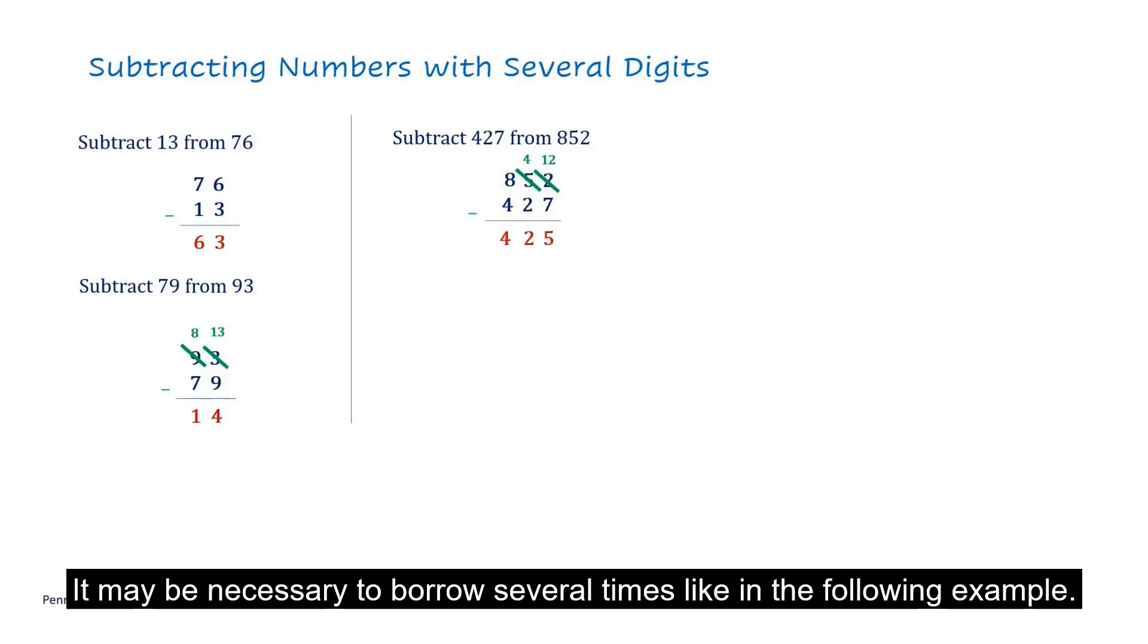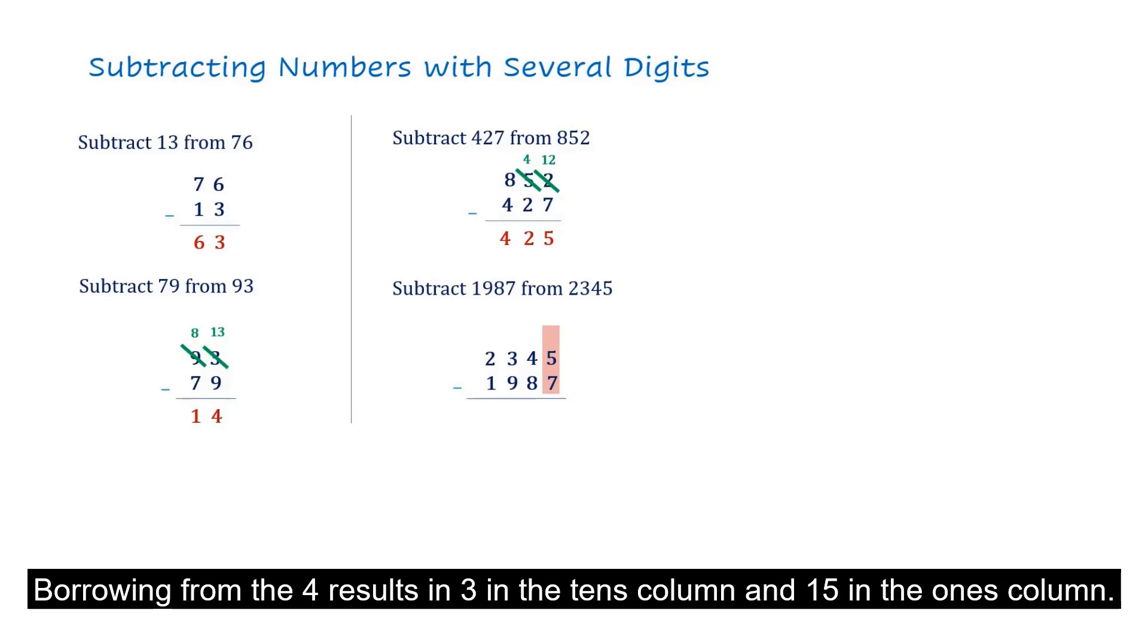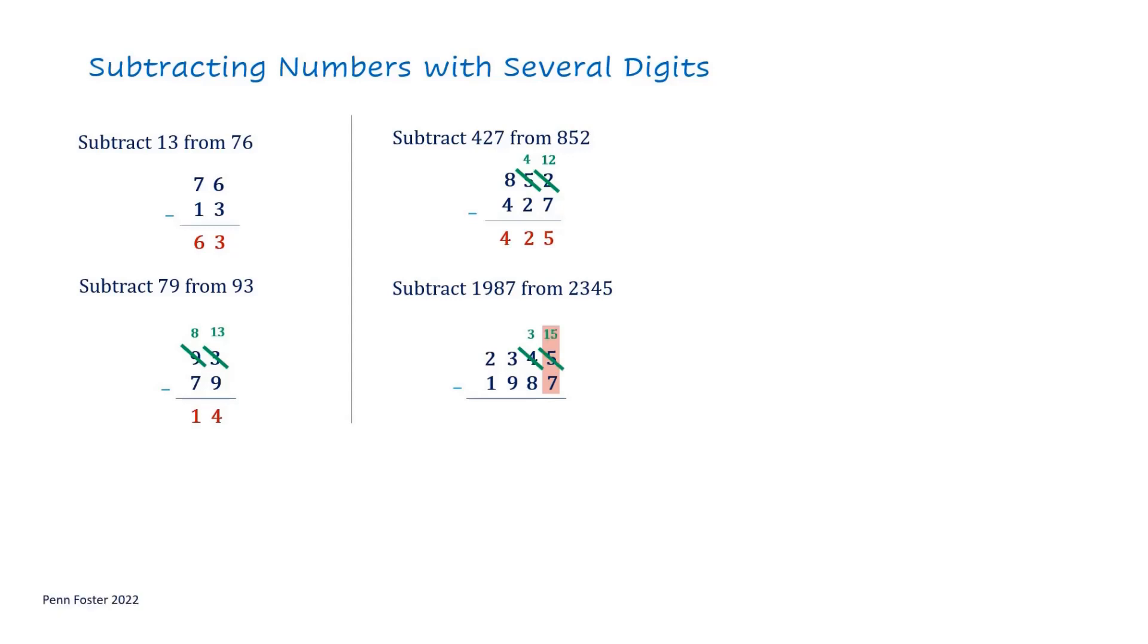It may be necessary to borrow several times, like in the following example. 5 minus 7 is not possible. Borrowing from the 4 results in 3 in the 10's column and 15 in the 1's column. 15 minus 7 is 8.